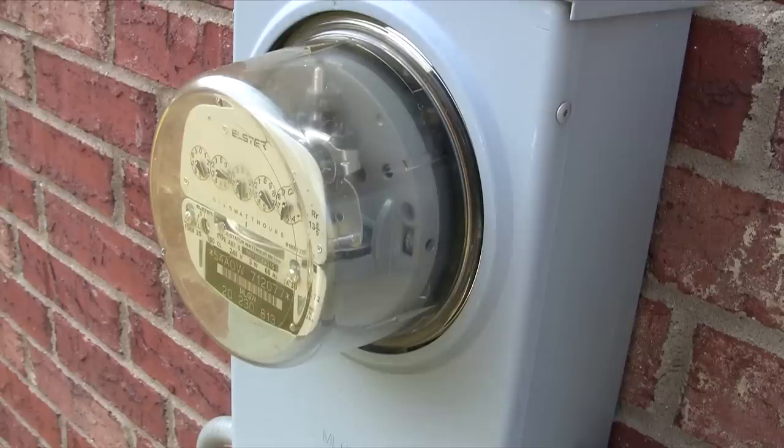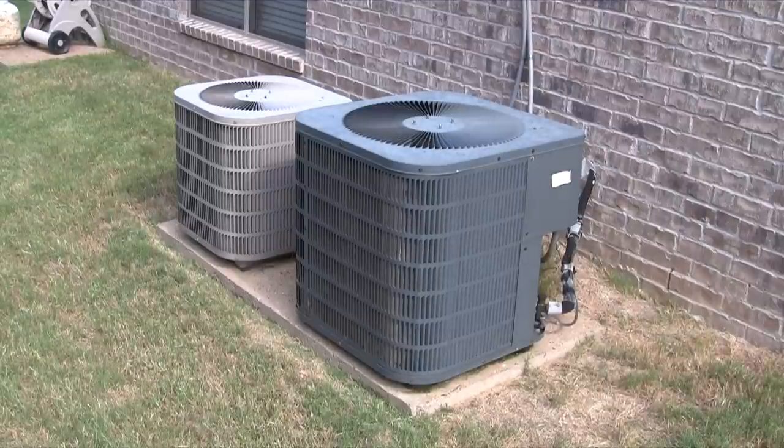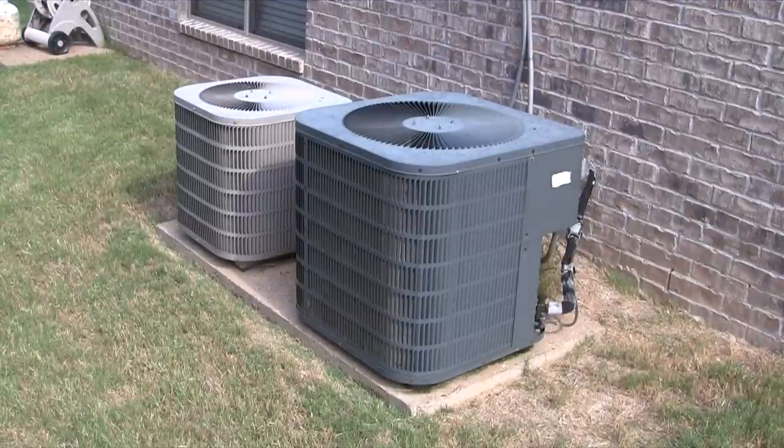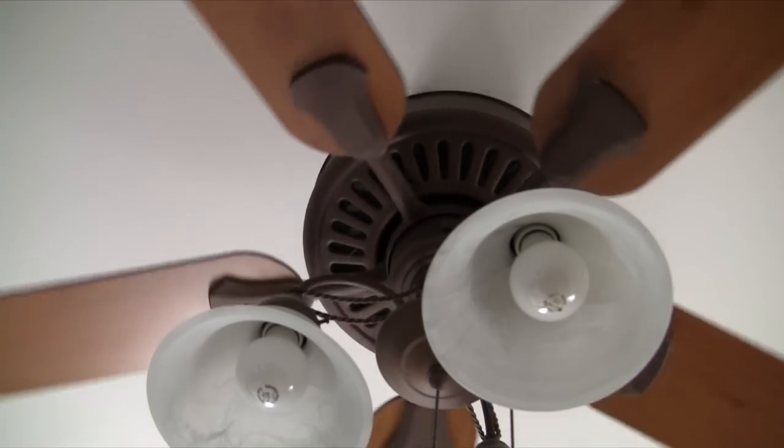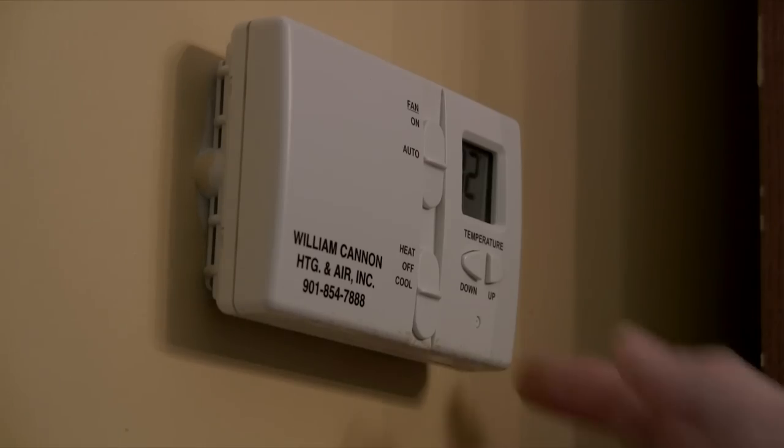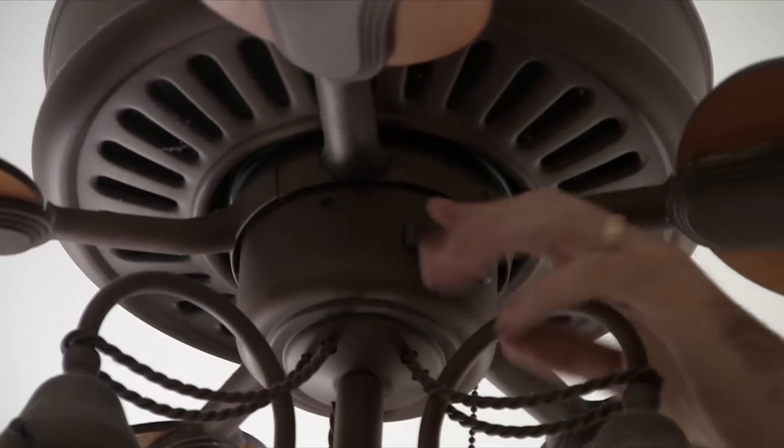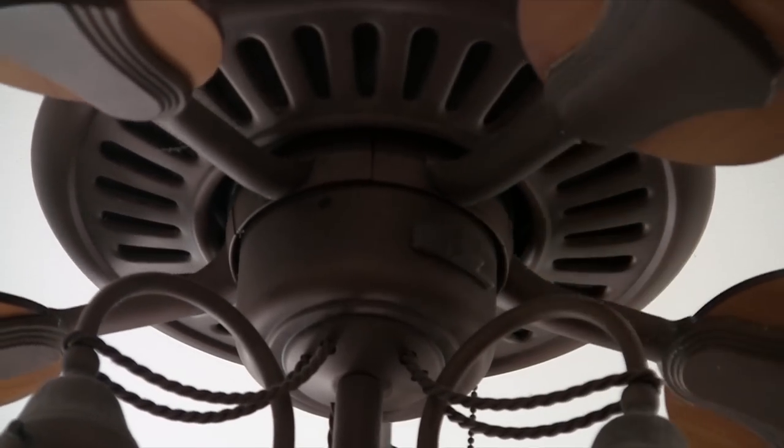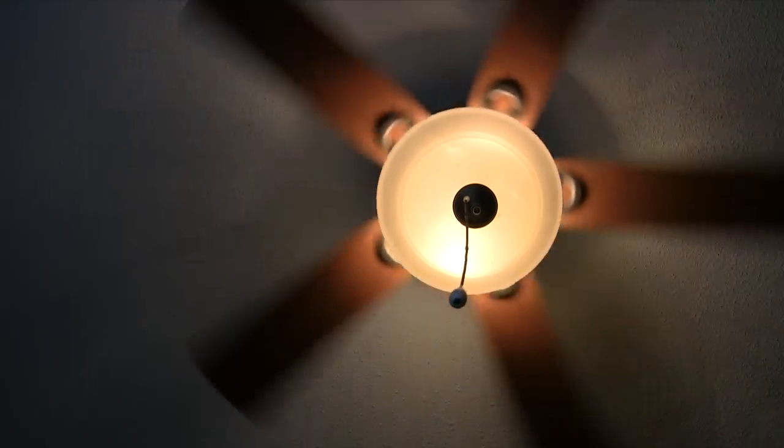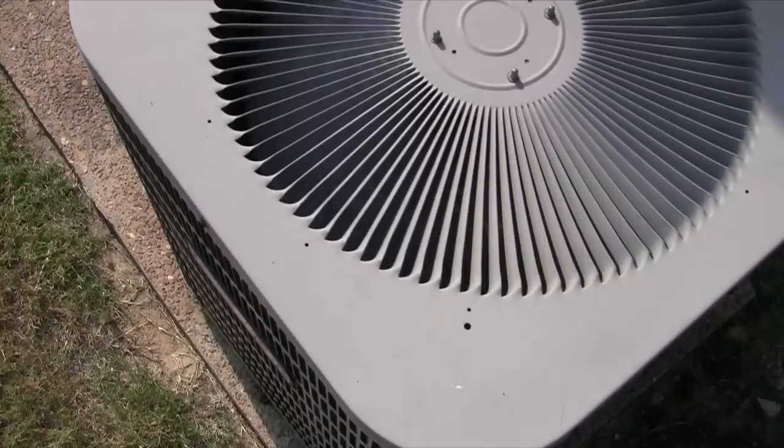For example, many air conditioning systems run at roughly 3,500 watts. A typical ceiling fan runs at only 60 watts. So by adjusting your thermostat and operating your ceiling fan blades in the appropriate direction, you'll keep the air moving, feel cooler, and the air conditioning system will run less often.